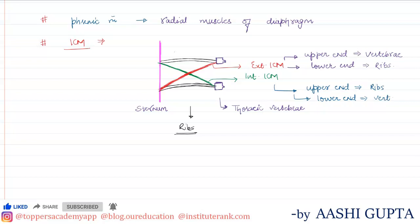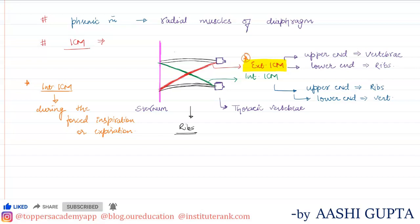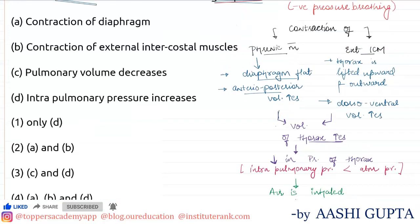External intercostal muscles are mainly required in the process of normal inspiration and expiration. Internal intercostal muscles are mainly required during forced inspiration or expiration. So in normal breathing, only the external intercostal muscles are used.